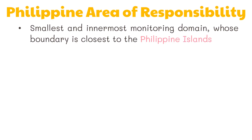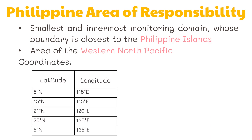The exact dimensions of this domain are the area of the western North Pacific bounded by imaginary lines connecting the coordinates: 5 degrees north and 115 degrees east, 15 degrees north and 115 degrees east, 21 degrees north and 120 degrees east, 25 degrees north and 135 degrees east, and lastly 5 degrees north and 135 degrees east.